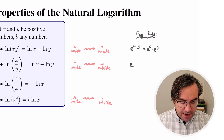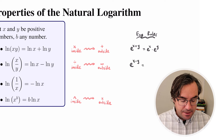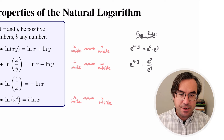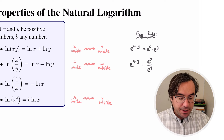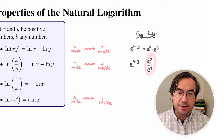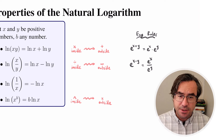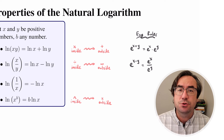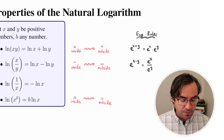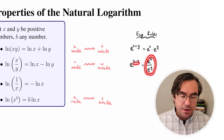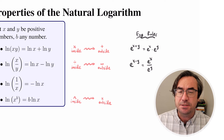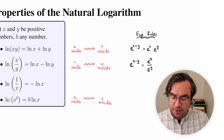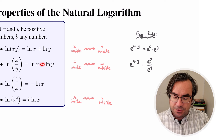We also had: e raised to the x minus y is the same thing as e raised to the x over e raised to the y. So when we're dividing exponentials, we just subtract the exponents. That's what our log property is doing — going from division to subtraction.